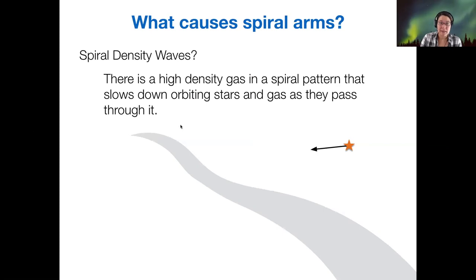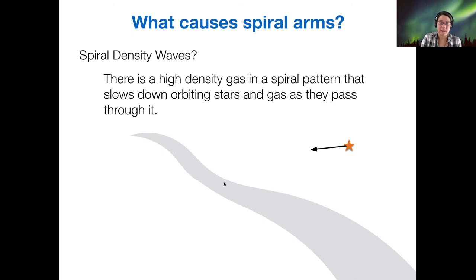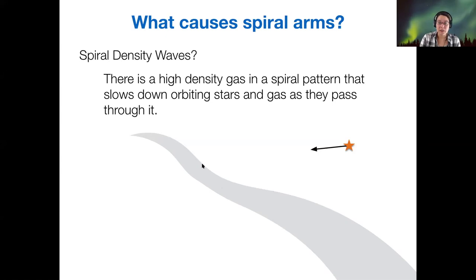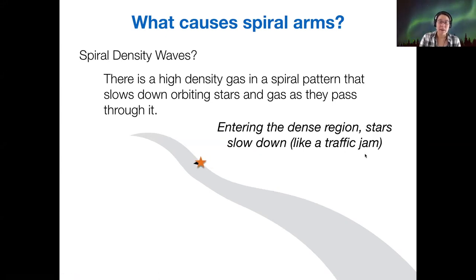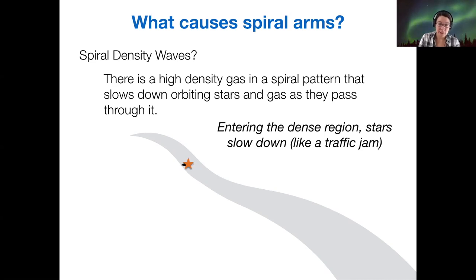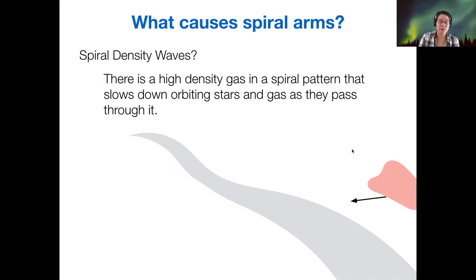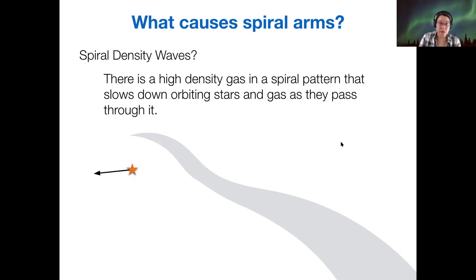In the animation, there's a high-density gas region — a thick area of gas — while outside it the gas is thin. As a star comes into this high-density region, it slows down, like a car in a traffic jam, and moves slowly while it's in the spiral arm. Then it can move quickly as it leaves the other side of the traffic jam.